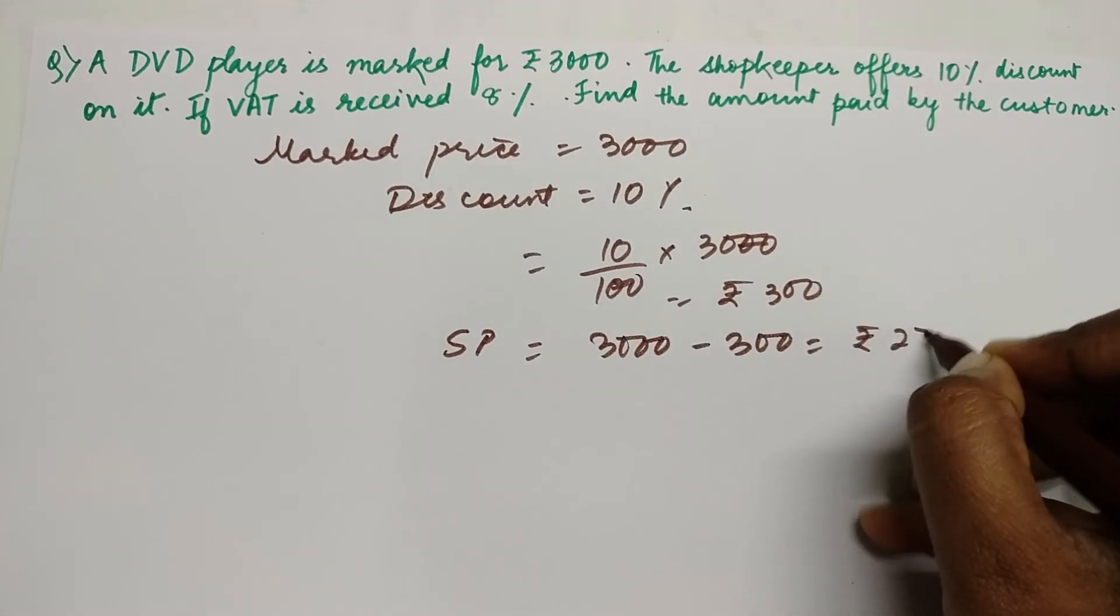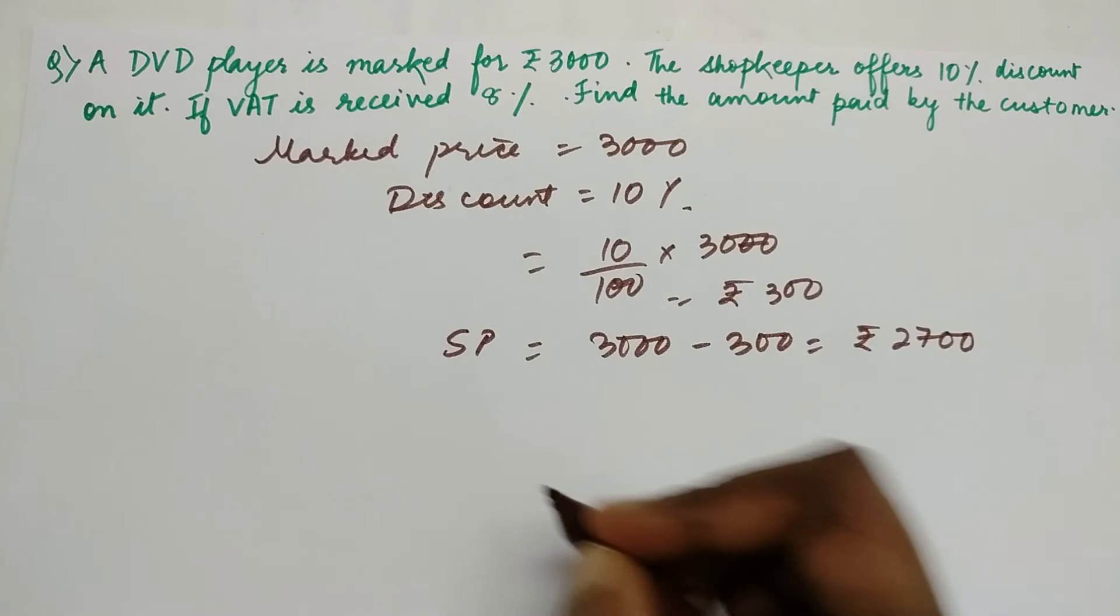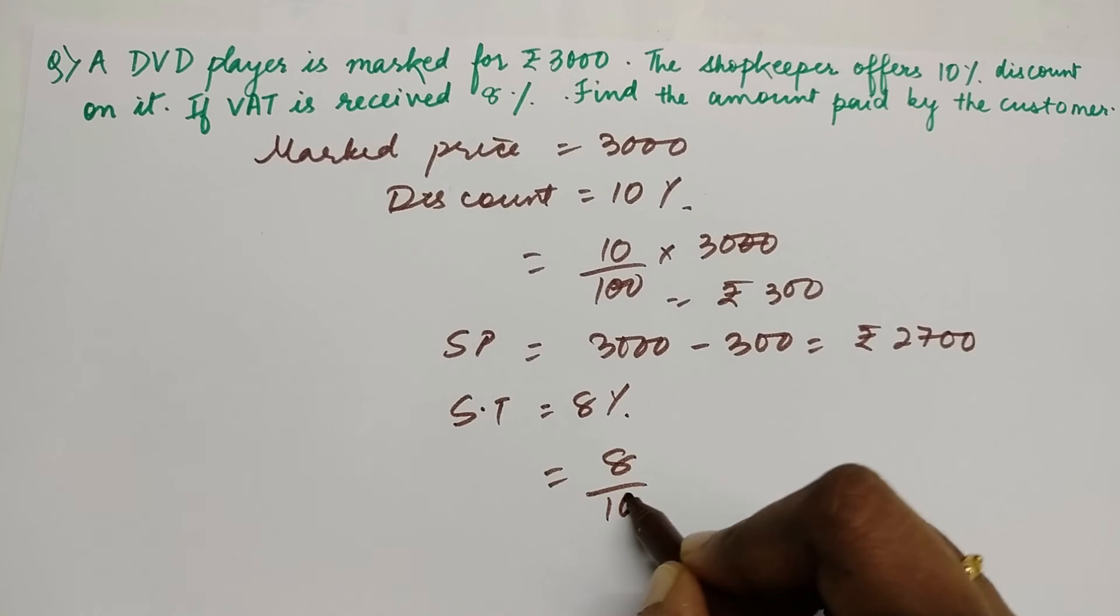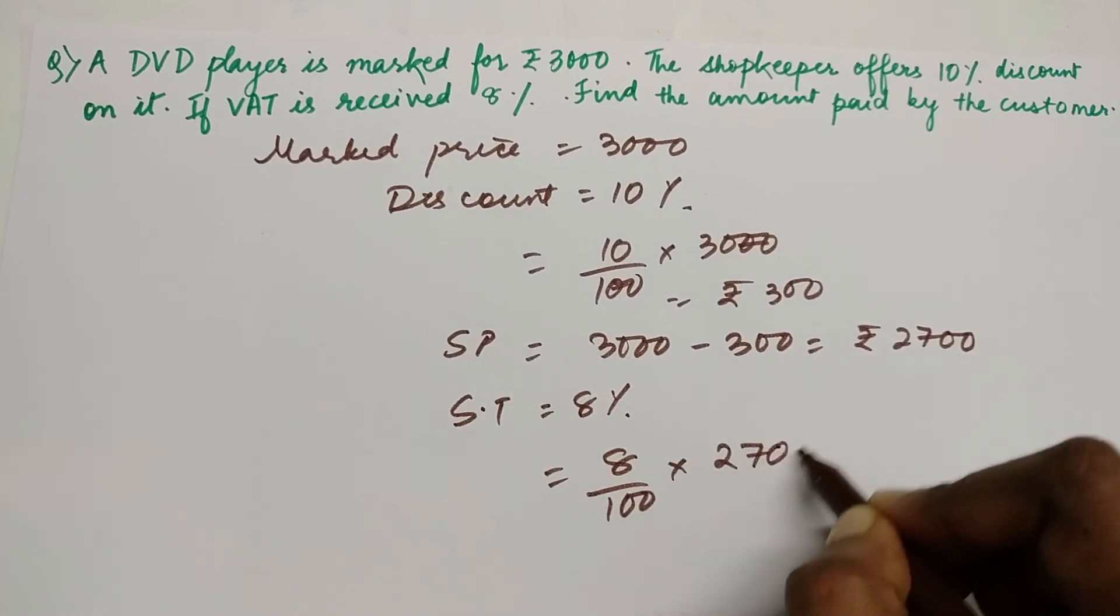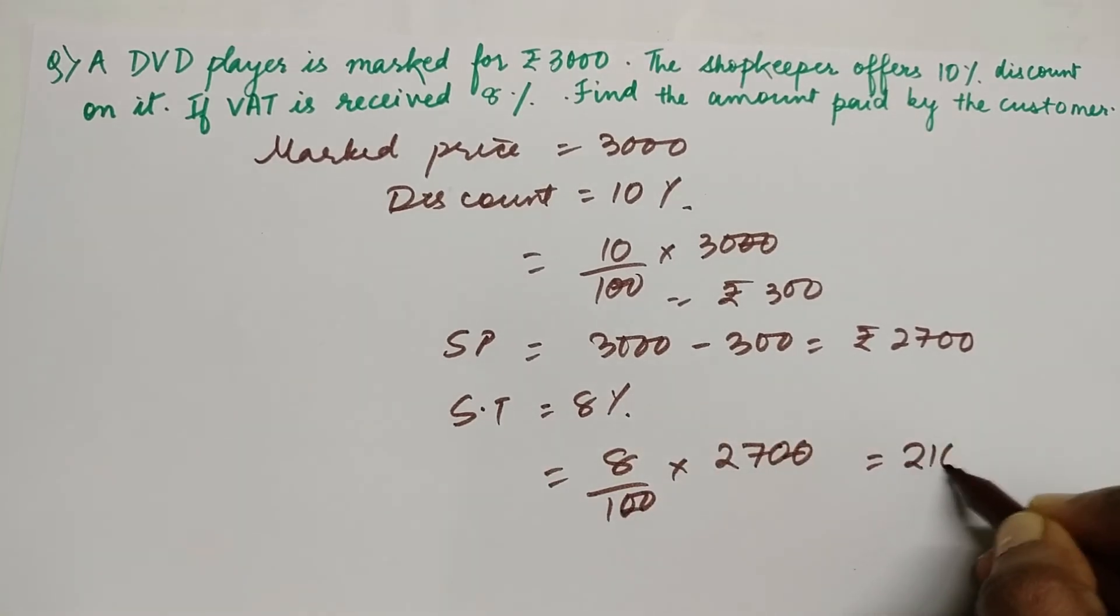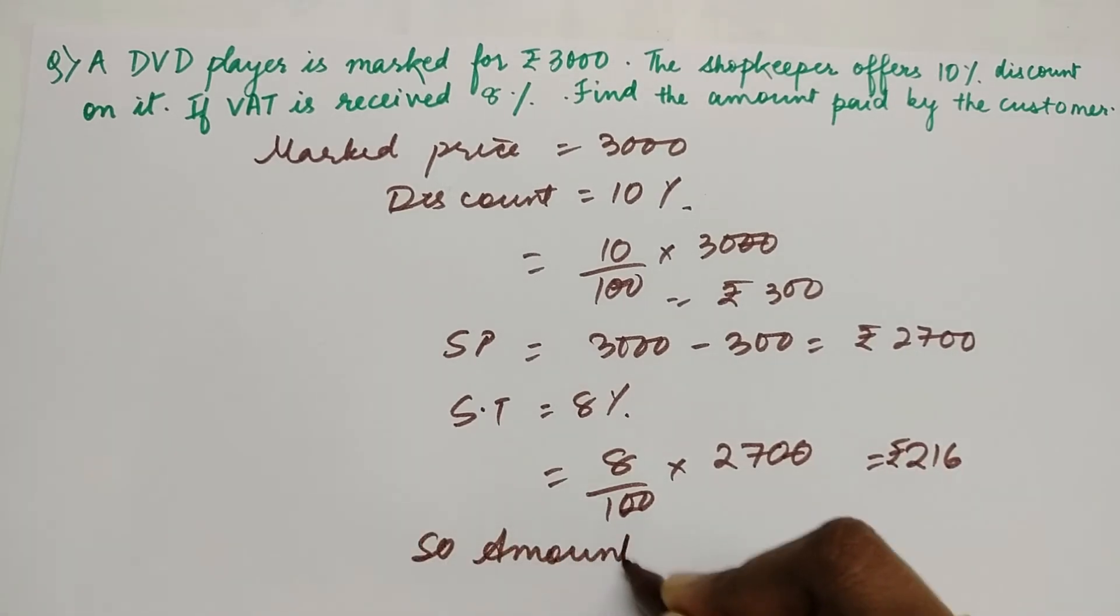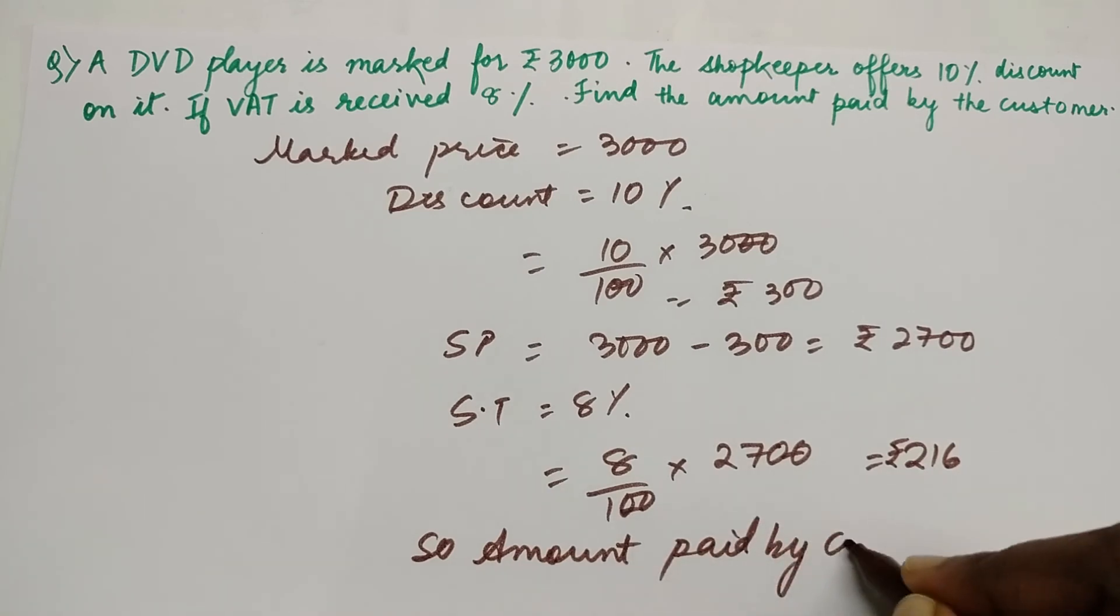But now he is also giving a tax of 8%. So sales tax is 8%, so that 8% is going to be calculated over ₹2,700, that is ₹216. So amount paid by the customer is going to be ₹2,700 plus ₹216.